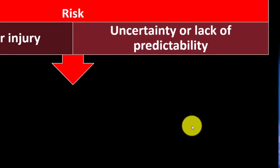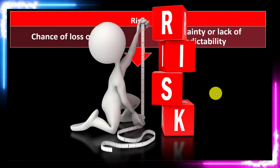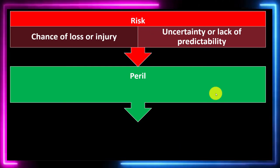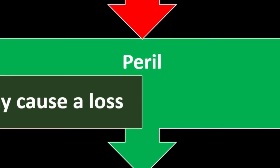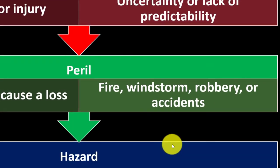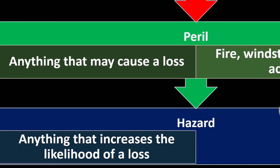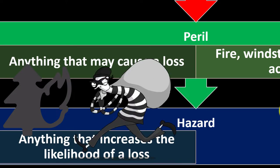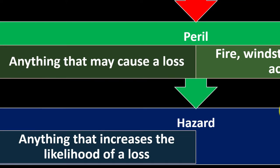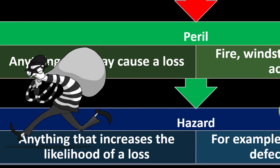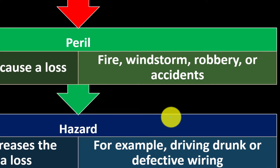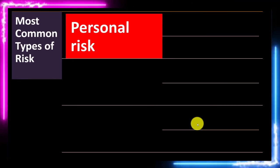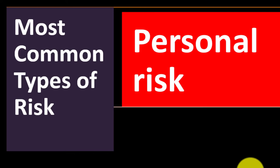Risk involves uncertainty or lack of predictability — we're talking about something that may happen in the future, so we can only think in terms of probability or likelihood. A peril is anything that may cause loss, such as fire, windstorm, robbery, or accidents. A hazard is anything that increases the likelihood of loss — for example, driving drunk or having defective wiring, both of which increase the chance of a car accident or fire respectively.